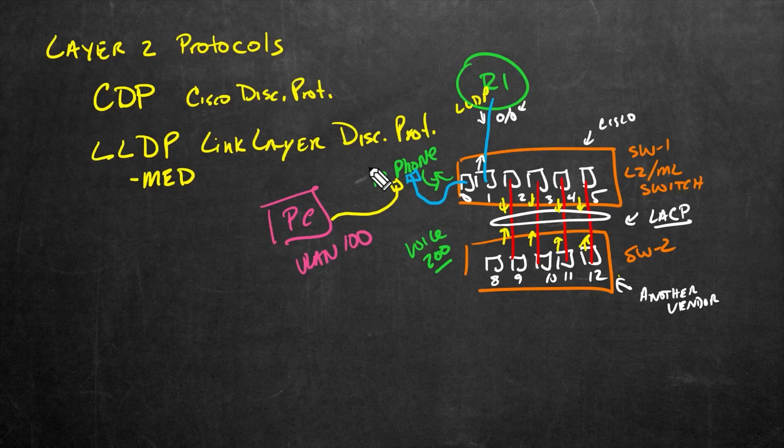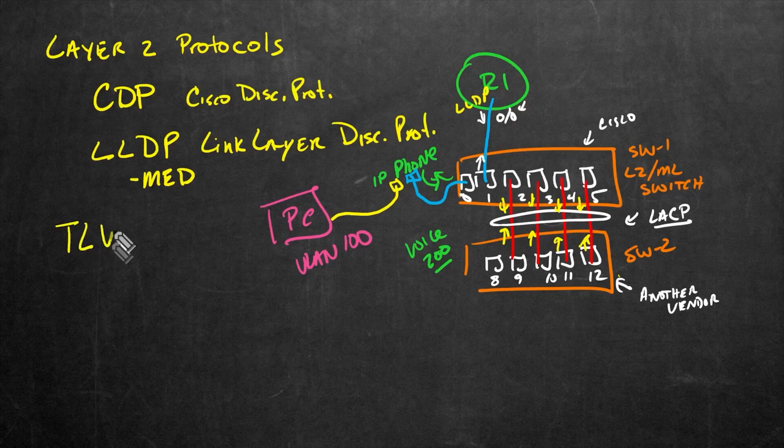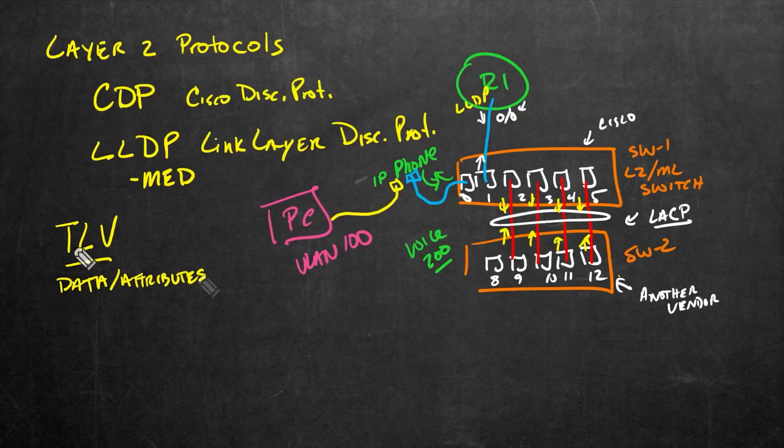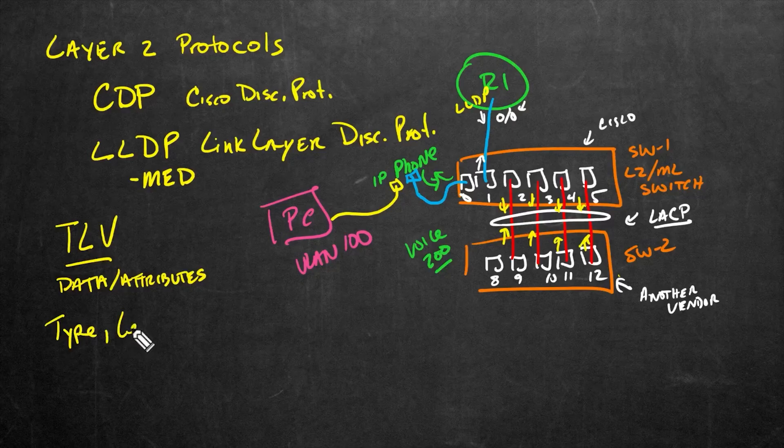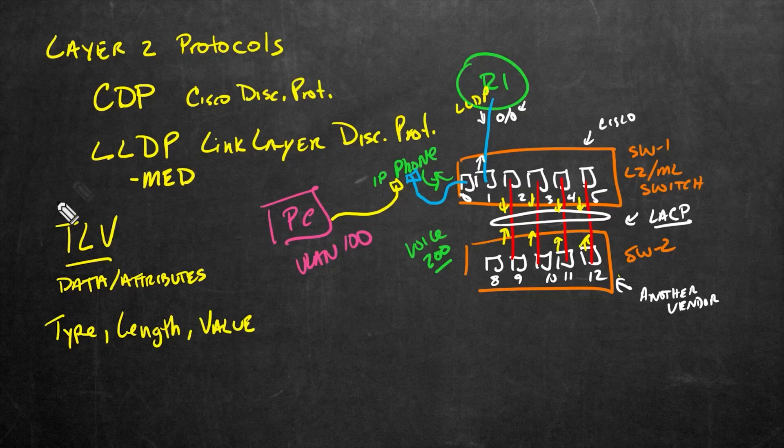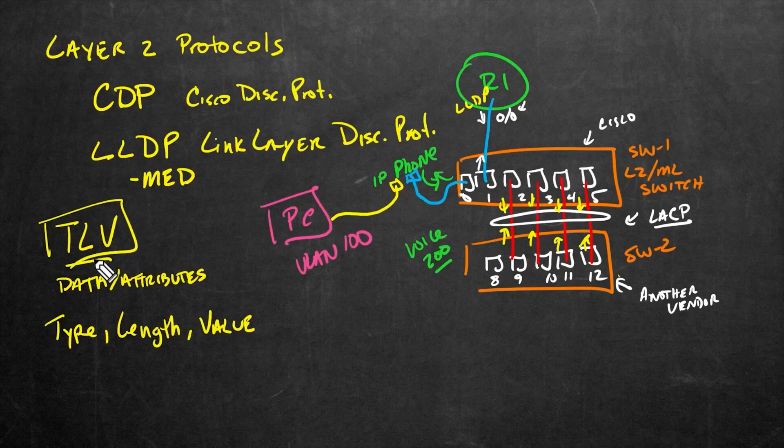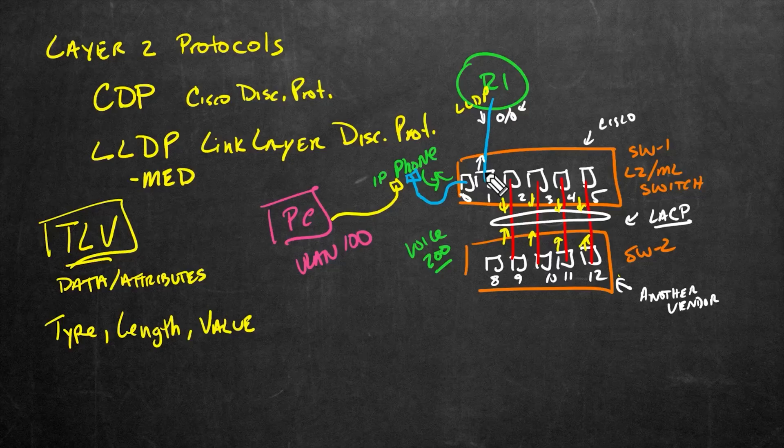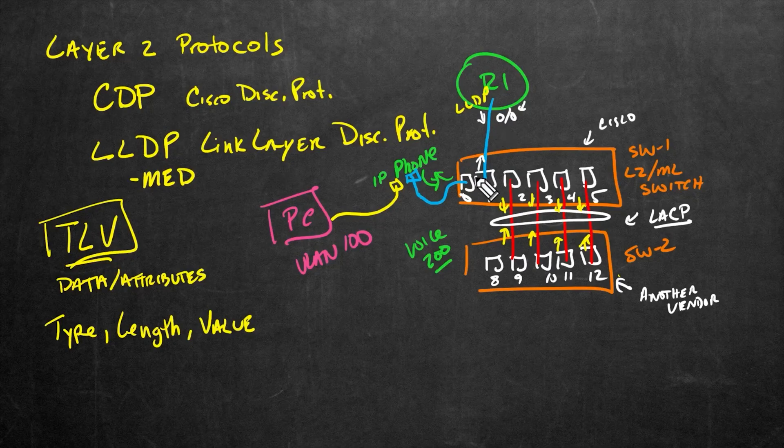Also behind the scenes, there's a concept of a TLV. And whenever you see TLV, think of data or attributes. And the actual TLV acronym stands for type—for example, the type of information—and the L is for length, and the V is for the actual value or the data itself. And so within LLDP, we can leverage the TLVs. For example, what exactly do we want to include or not include when we send our little LLDP messages back and forth?